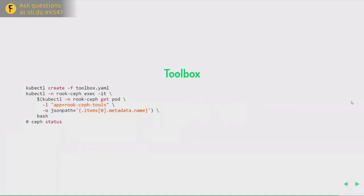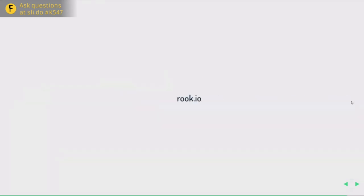Rook also comes with a toolbox — a pod with all of the Ceph tooling available. If you want to debug, verify the Ceph cluster is running correctly, or dig into the cluster manually, you can spin up a toolbox and jump into it using a command to access all expected Ceph commands. There's a lot more to Rook than this; for more information and documentation, visit rook.io.